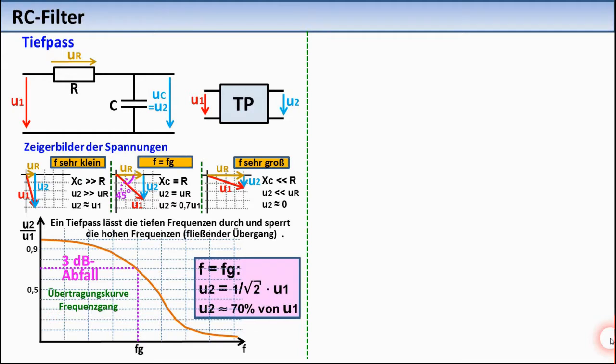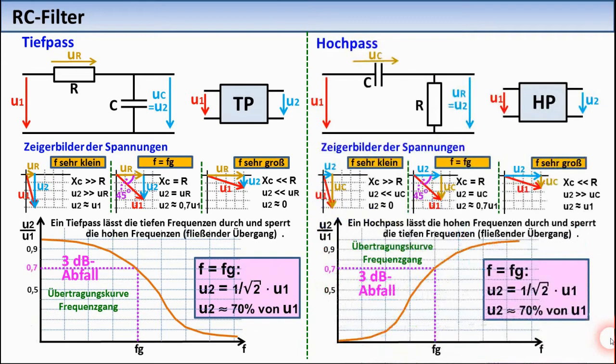The circuit is therefore called a low-pass filter. The series-connected capacitor in the right circuit lets high frequencies through and blocks low frequencies. The circuit is therefore called a high-pass filter.